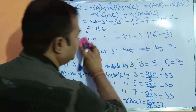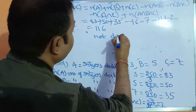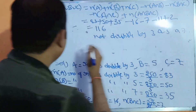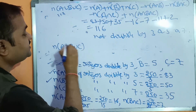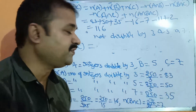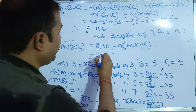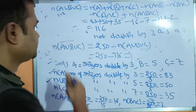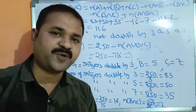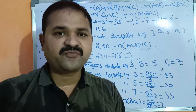The last problem: how many integers are not divisible by 3 or 5 or 7? This can be written as the complement of (A∪B∪C), which equals total − n(A∪B∪C) = 250 − 116 = 134. That is the number of integers not divisible by 3 or 5 or 7. In this way we can solve any problem using the Principle of Inclusion and Exclusion.